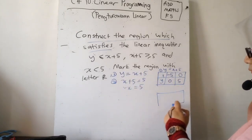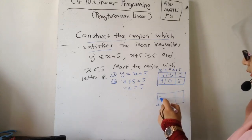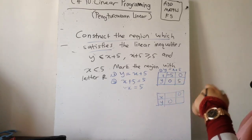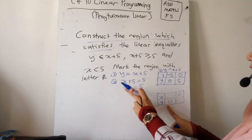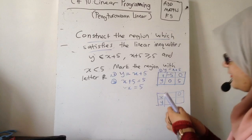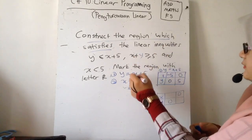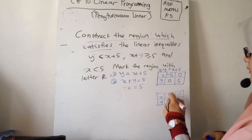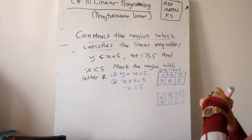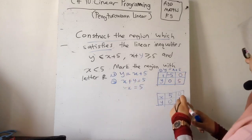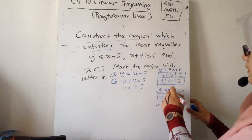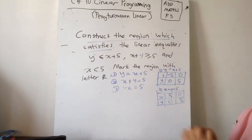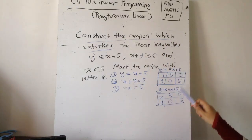Yang second pun sama. Kita akan cari X intercept dan Y intercept untuk X plus Y equal to five. Kalau Y kosong, X dapat lima. Kalau X kosong, Y pun dapat lima. Kita dapat untuk yang second punya line, X plus Y equal to five. And then yang ketiga, dapat line terus sebab dia kata X sama dengan lima - dekat X sama dengan lima kita garis je lah nanti.